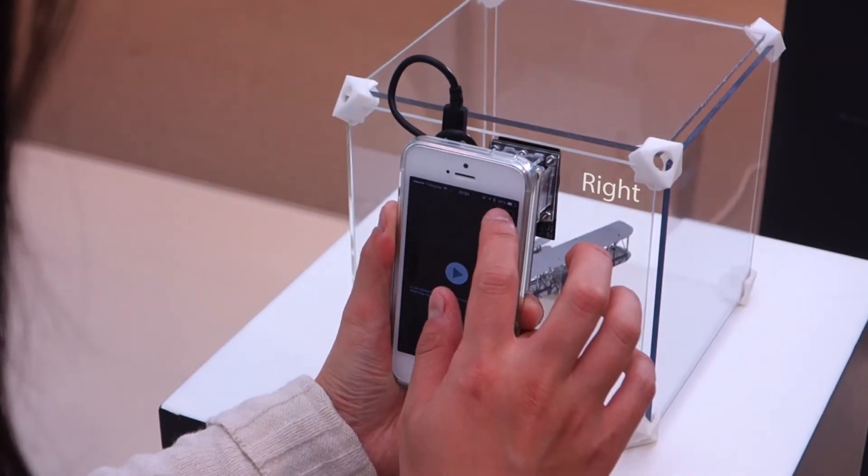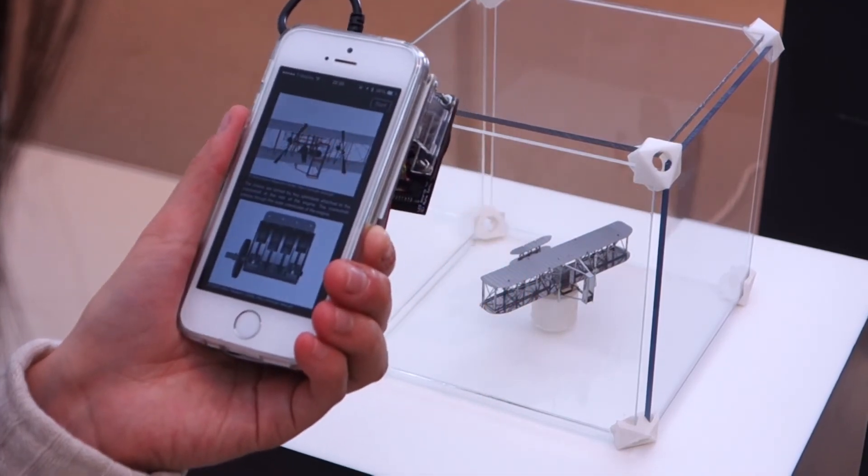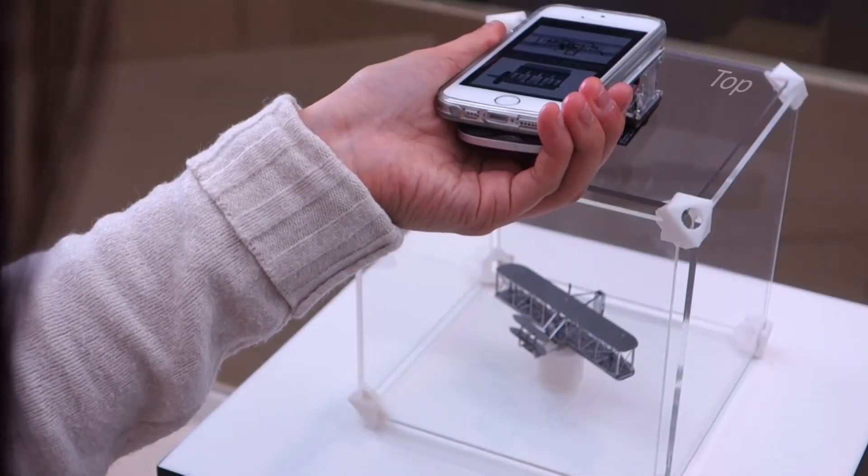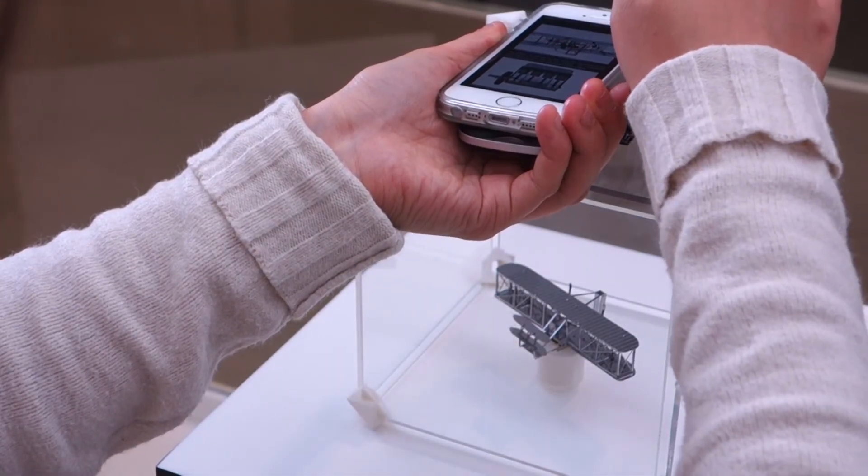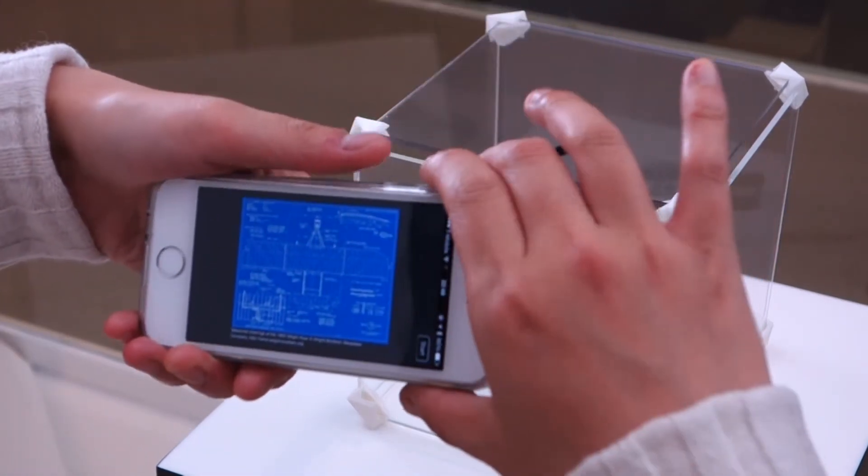When the user scans the right face of the showcase, where the propeller of the plane attracts more attention, an animation explaining how the engine and propeller work will be played. Finally, when the user scans the top of the showcase, a top-view blueprint of the airplane appears on the screen.